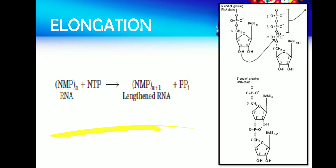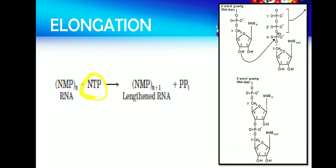In the general reaction for elongation, the nucleotide on the growing chain of RNA is a nucleotide monophosphate (NMP) — it has only one phosphate. A new nucleotide triphosphate (NTP) is added to this growing chain, but only the NMP portion gets added. So the reaction is: NMP(n) + NTP → NMP(n+1) + pyrophosphate. This is how every nucleotide is added onto the growing RNA chain, forming the RNA. That is how elongation takes place.